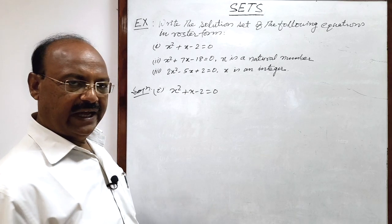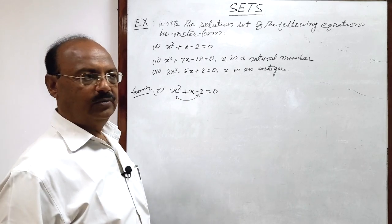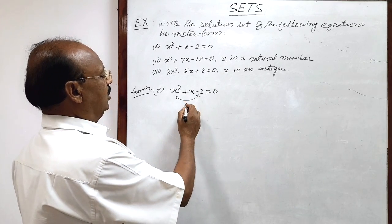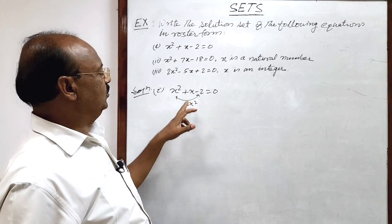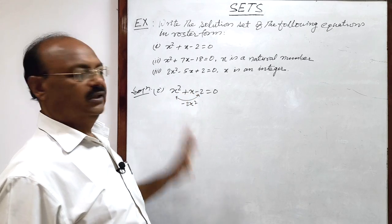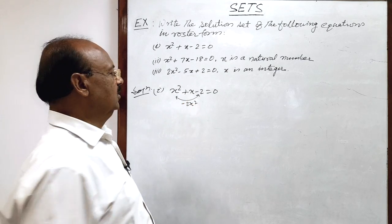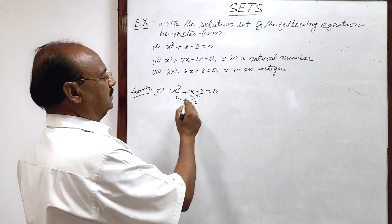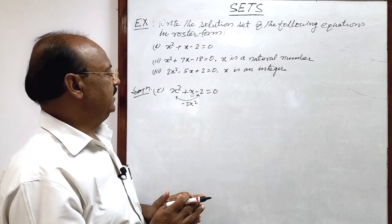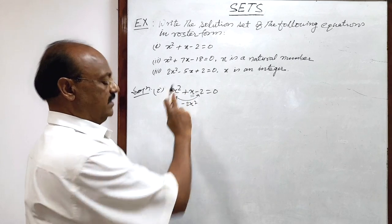To split the middle term, we multiply the first and last terms when terms are arranged in descending order. This multiplication gives minus two x squared, because we have to consider the sign as well. We have to split the middle term x into two terms such that their product is minus two x squared, but their sum or difference remains x.